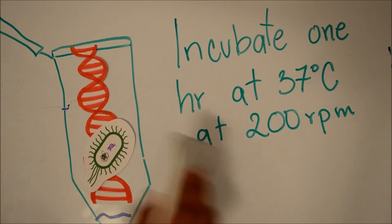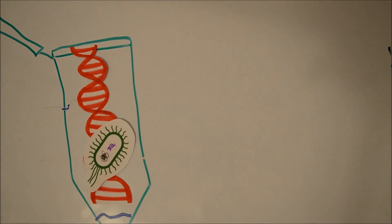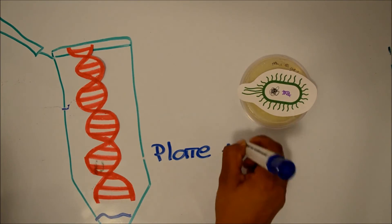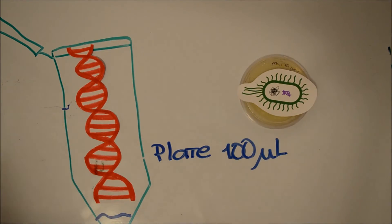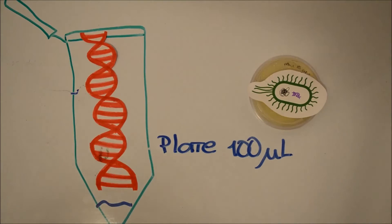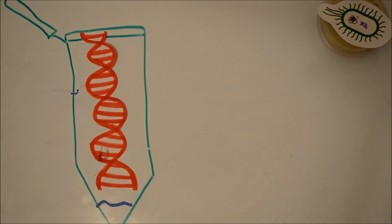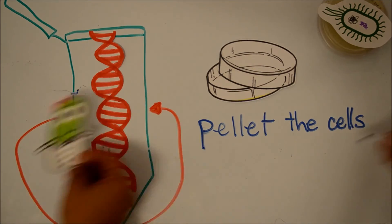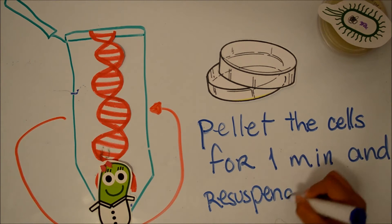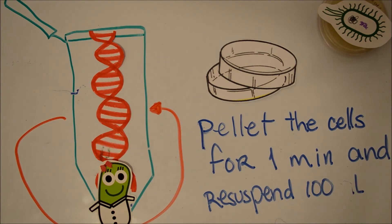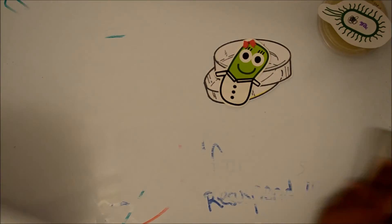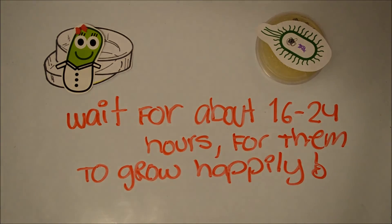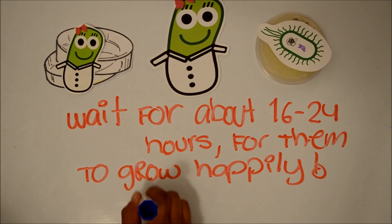Pellet the cells for 1 minute at 1200 rpm and resuspend in 100 microliters. Plate onto selected media. Good luck!